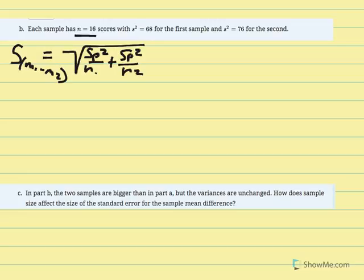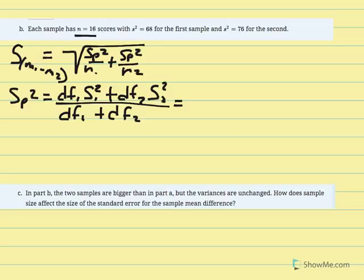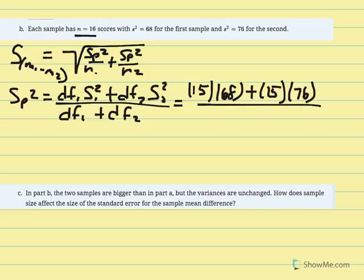Calculating pooled variance again using the variance-based equation: degrees of freedom 1 times variance 1 plus degrees of freedom 2 times variance 2, over degrees of freedom 1 plus degrees of freedom 2. Now n equals 16, so degrees of freedom equals 15. So: 15 times 68 plus 15 times 76, over 15 plus 15.